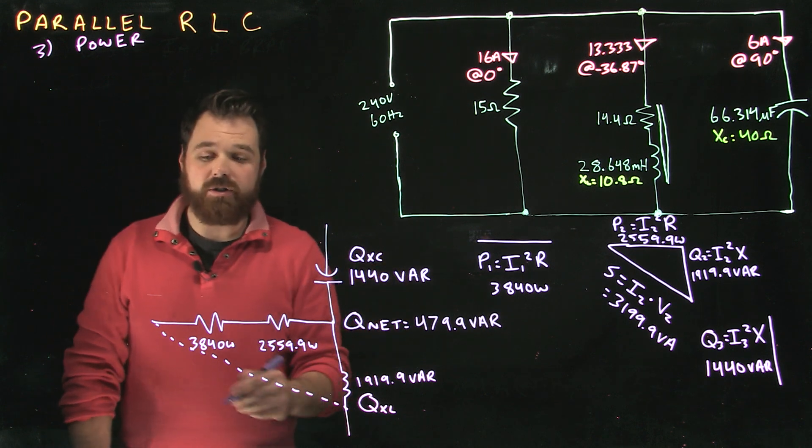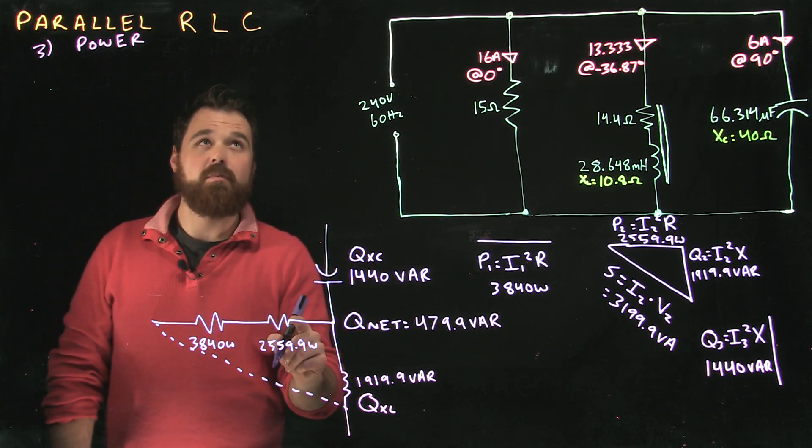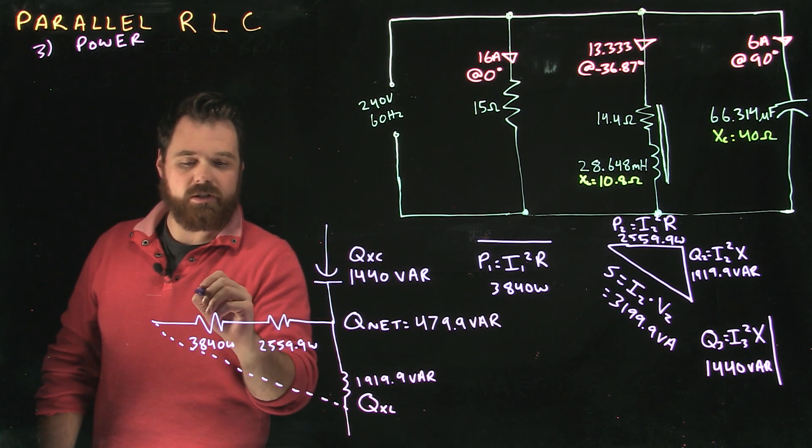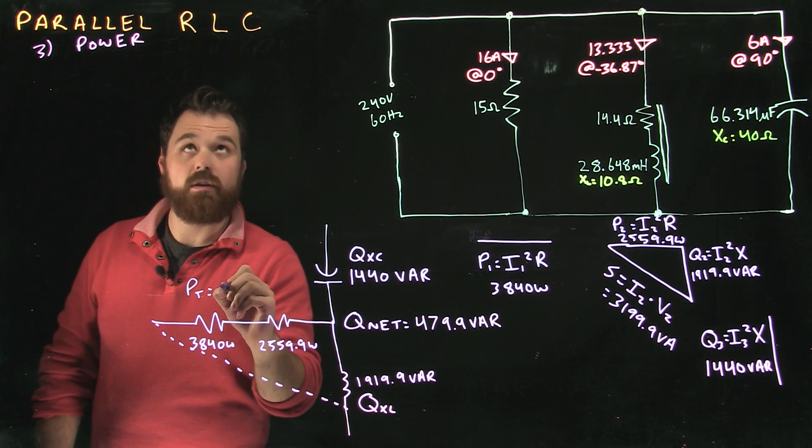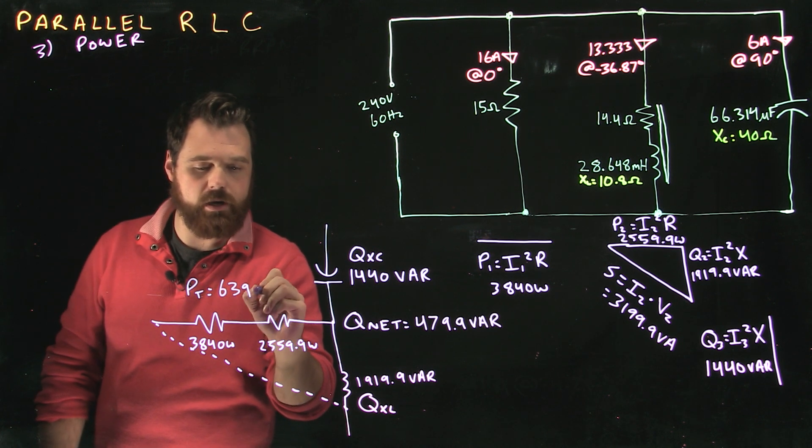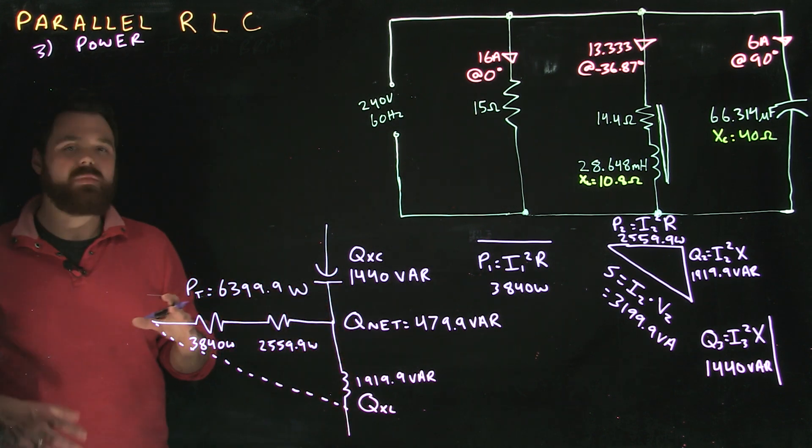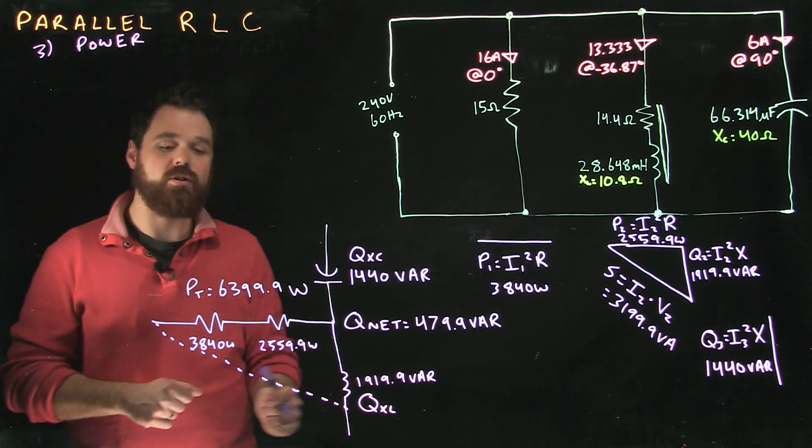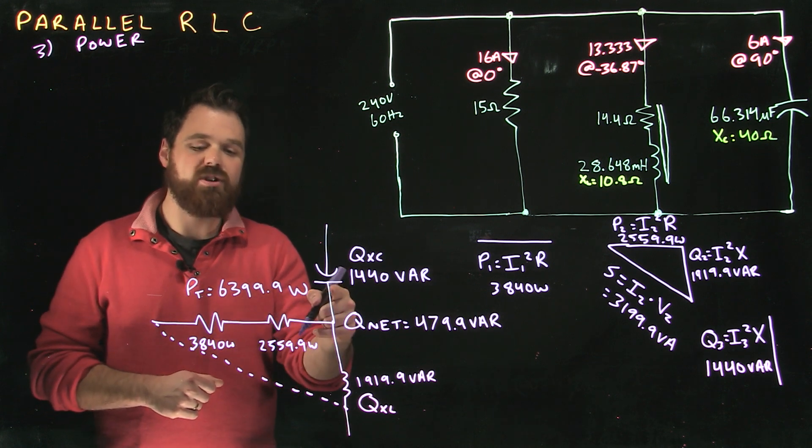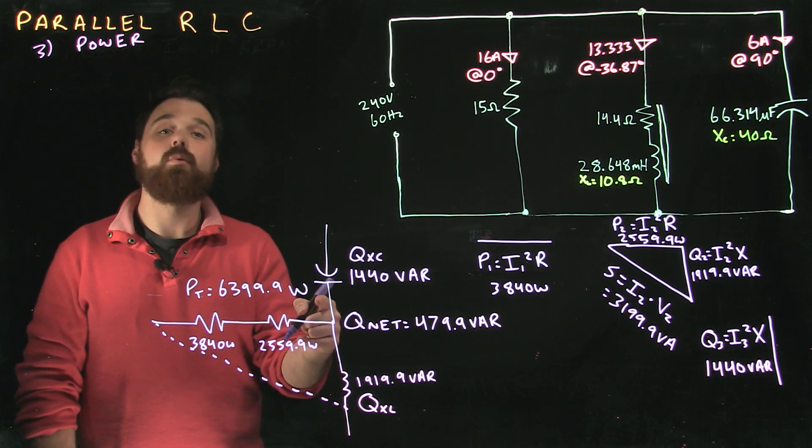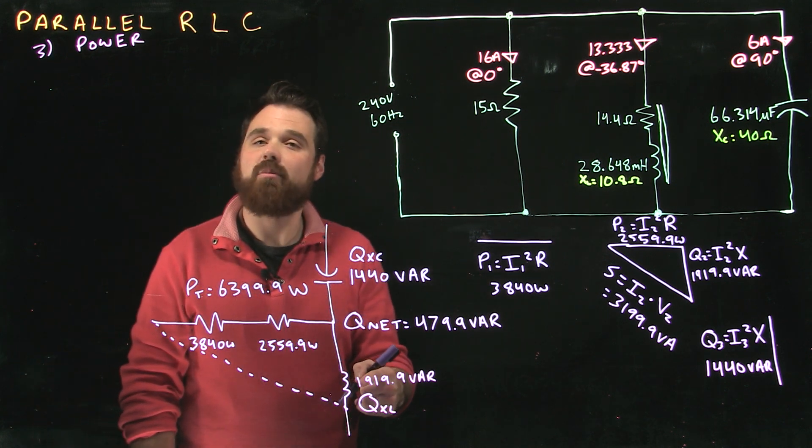My power total is going to be P1 plus P2. In this case, Pt equals 6399.9 Watts. So now I've created for myself a power triangle for the circuit. 6399.9 Watts, 479.9 Vars.